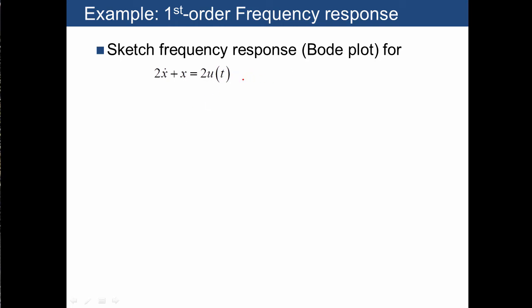Next, we're going to work through a few examples. Here we have a first-order differential equation, which we need to plot the frequency response for. First, we need to convert that into a transfer function, so we get 2 over 2s plus 1. It may be helpful to divide both sides by 2 in order to get this form, which makes it easiest to identify the corner frequency, which is going to be 0.5.